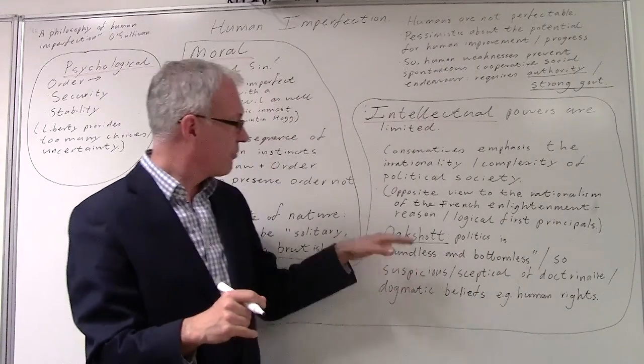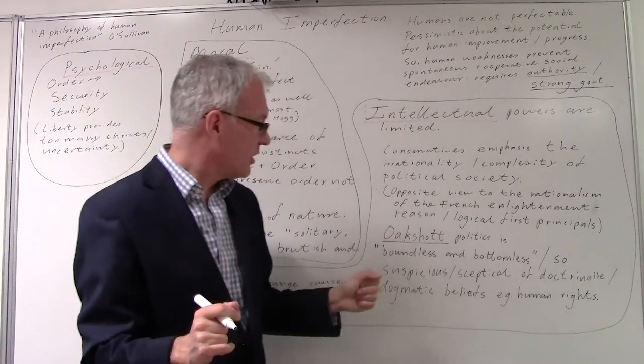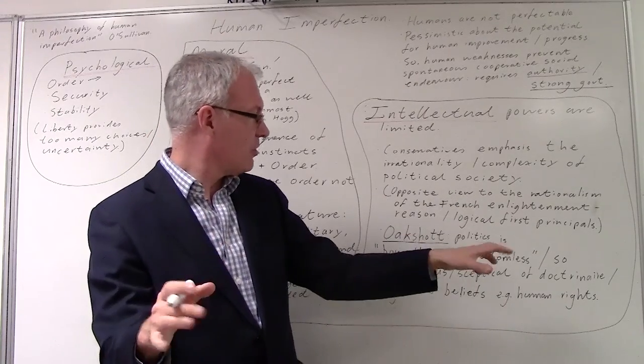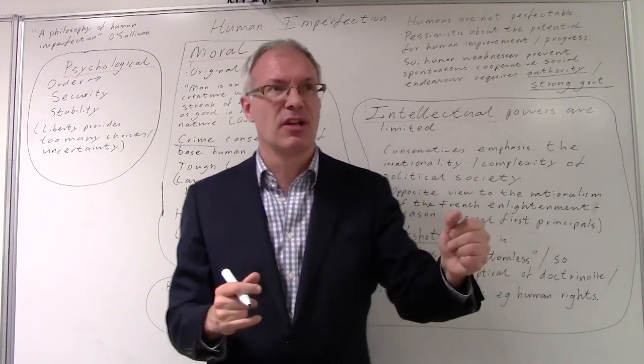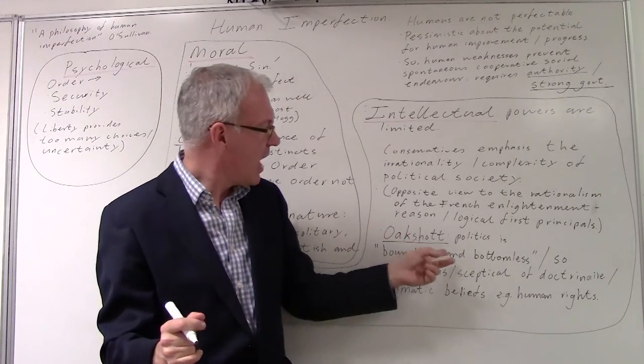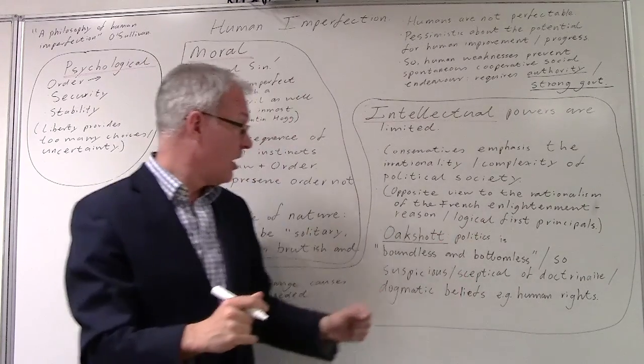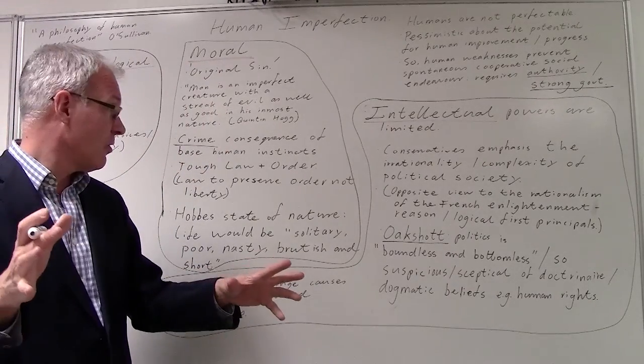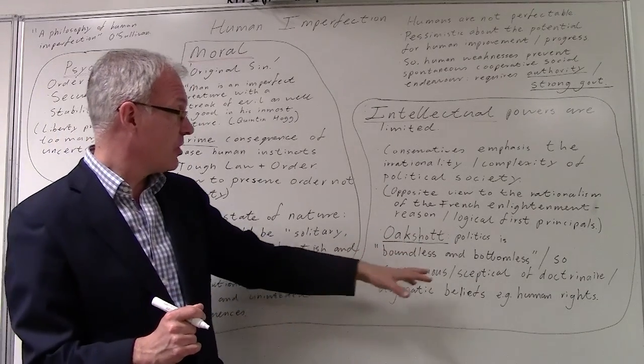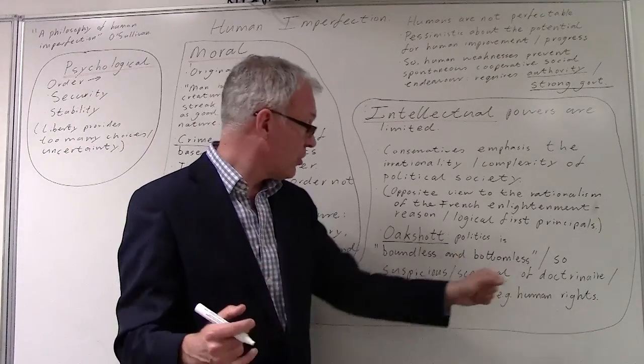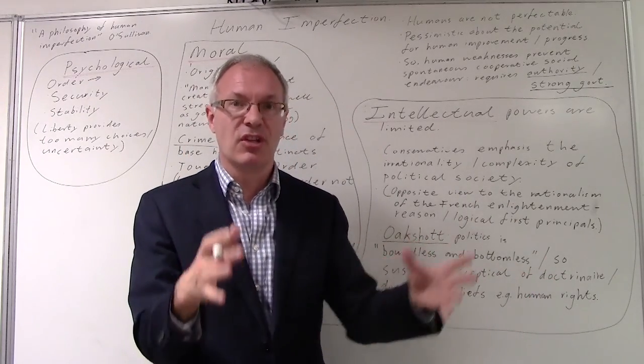For Michael Oakeshott, a 20th century writer on conservatism well worth looking at, he argues that politics is boundless and bottomless. What he means by that is that our relationships are highly complex. We have millions of relationships and we can't simply change all that and introduce universal principles, because it will result in unintended consequences. For thinkers such as Oakeshott, they're highly suspicious and skeptical of what they would call doctrinaire, dogmatic beliefs, such as some liberal beliefs in human rights or socialist beliefs in equality.